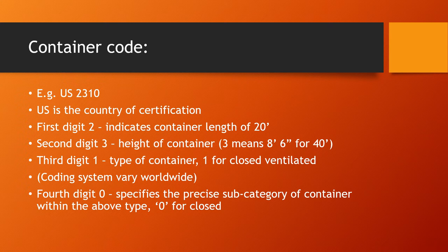Below the container number, we may have something like US 2310 — this is the container code. Here, 'US' represents the country of certification. The first digit '2' refers to the container length of 20 feet; if it were a 40-foot container, it would start with a '4'. The second digit '3' refers to the height of the container — '3' means eight feet six inches for a 40-foot container.